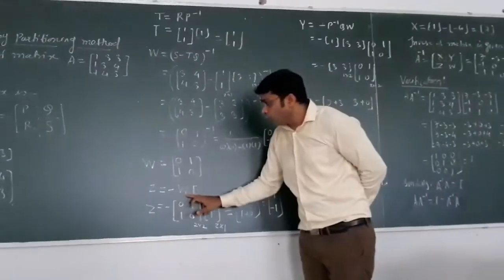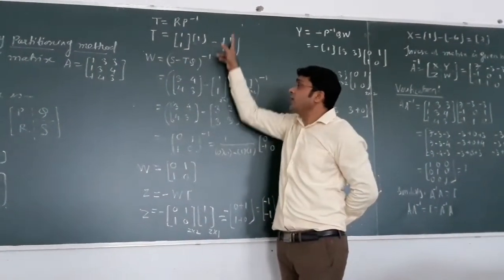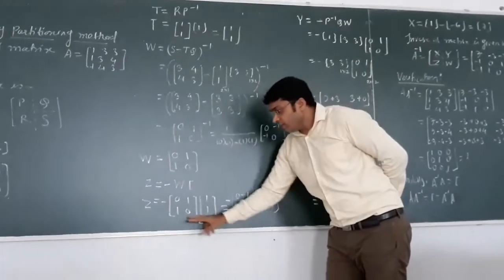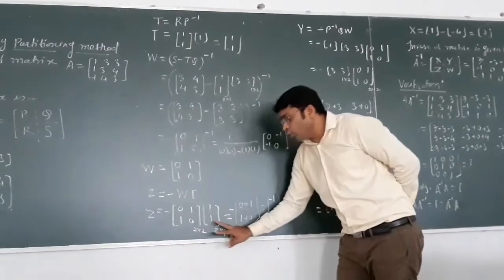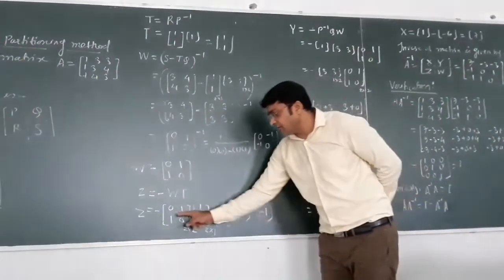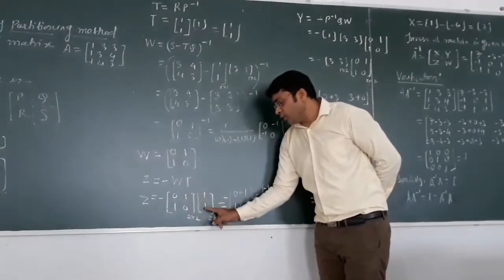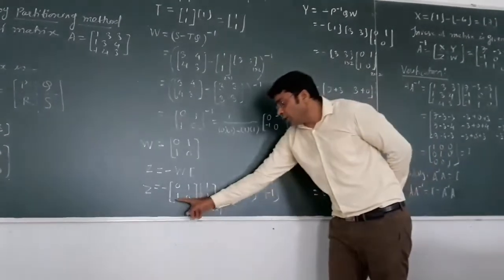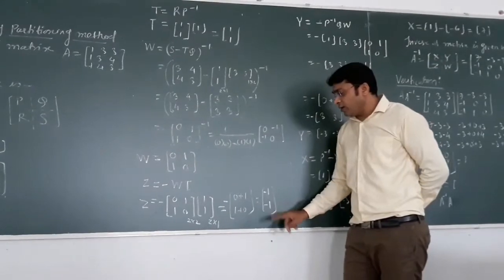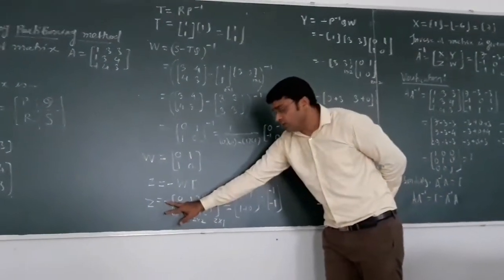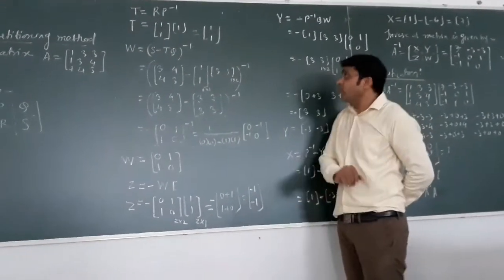W is [0, 1; 1, 0] and t is the column matrix [1, 1]. Taking the multiplication: first element is 0×1 + 1×1 = 1, second element is 1×1 + 0×1 = 1. We already have a minus sign outside, so applying minus to each element gives z = [−1, −1].